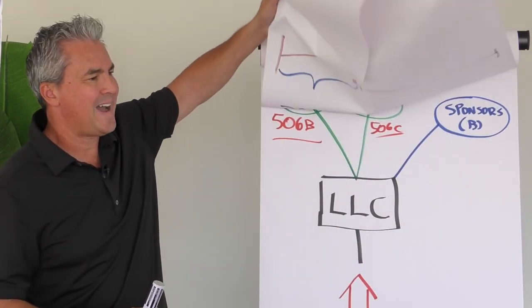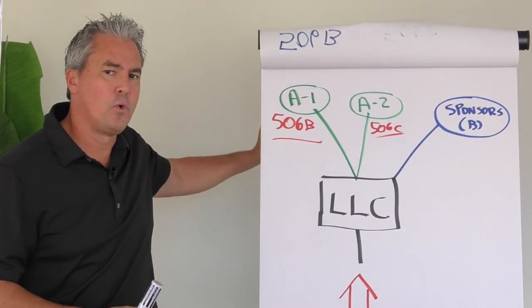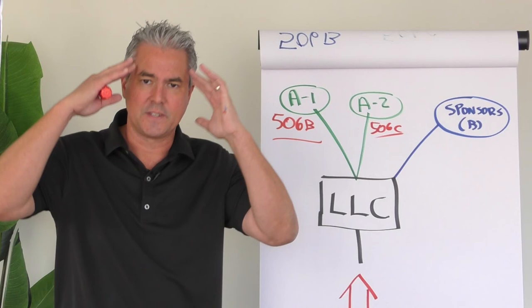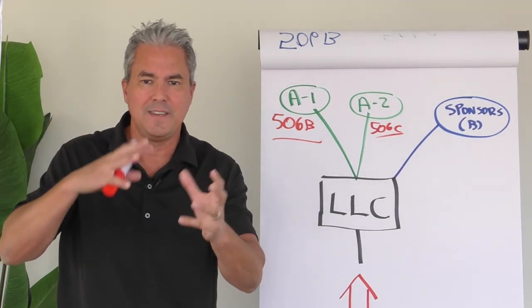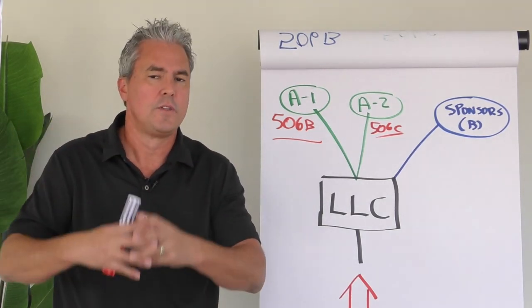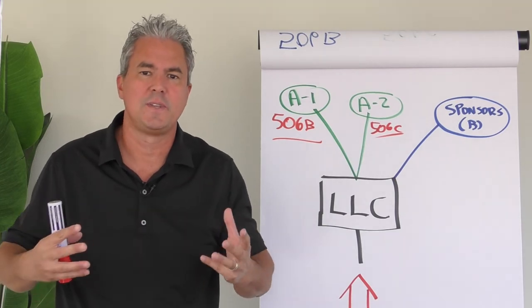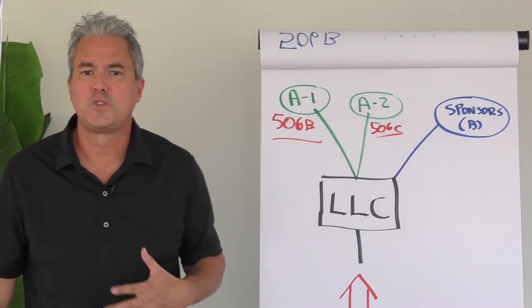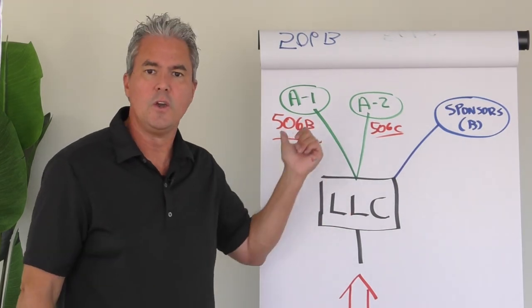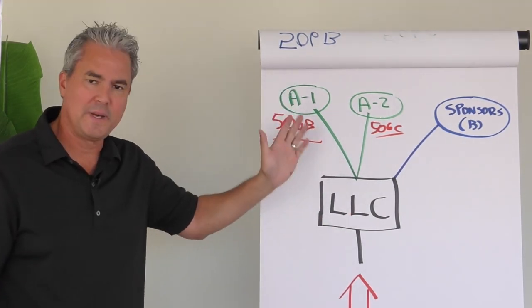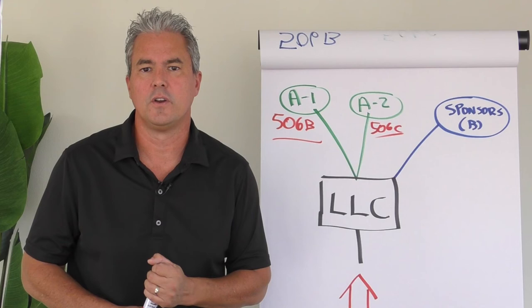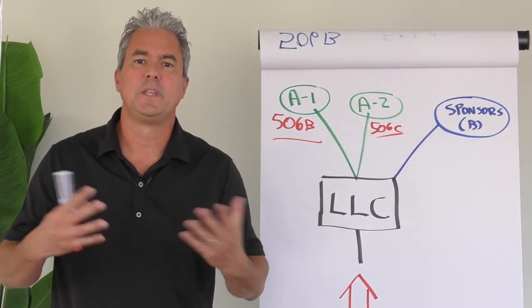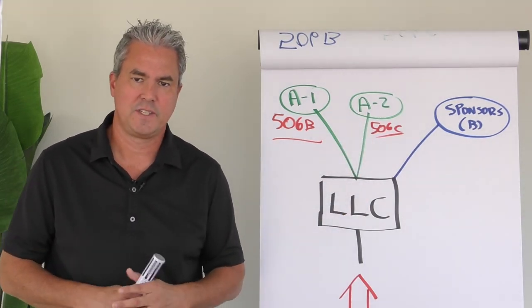So those are kind of our top two recommendations for best practices. And of course, the last one we would do is actually file two separate Form Ds. Because again, you've got to think about this. These are two separate offerings, even though they're the same deal. They're virtually the same documentation, but it's the same deal. And so we file two Form Ds. One for the 506B within 15 days of that termination day, and then we file another Form D within 15 days of completely finishing the raise under 506C.